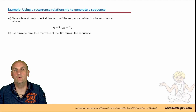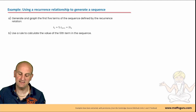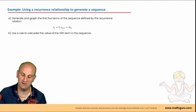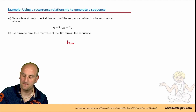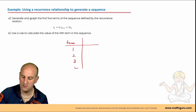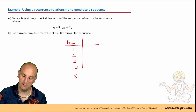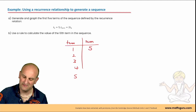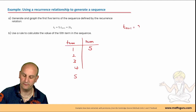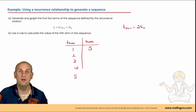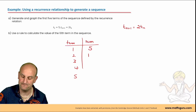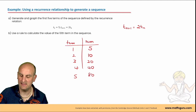Let's work through an example — generate and graph the first five terms of a sequence. I'll set up a table with term numbers 1 through 5. The recurrence relationship tells us t1 = 5 and t(n+1) = 2·t(n) — that's a multiply-by-two rule. So starting at 5: 5, 10, 20, 40, 80.